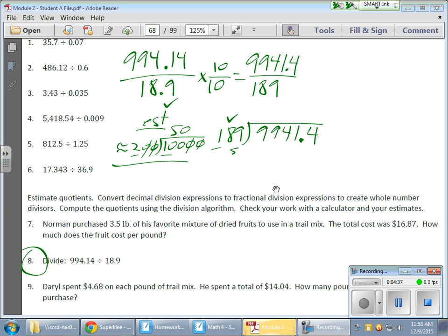So, let's see. 189 goes into 9, 0 times. It goes into 99, 0 times. But it does go into 994 some amount of times here. So, this is my little estimation over here. So, my division problem.